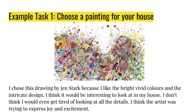So I made some examples of each of the tasks. Here's the first one, choosing a painting for your house. I chose this drawing by Jen Stark because I like the bright vivid colors and the intricate design. I simply found it by doing a Google image search of abstract expressionist paintings. I think this would be an interesting painting to look at in my house — I don't think I would ever get bored of it because of all the details, and I think what the artist is trying to express here is joy and excitement.